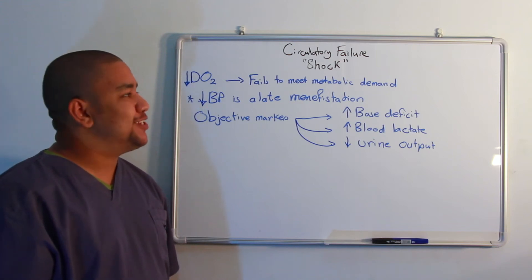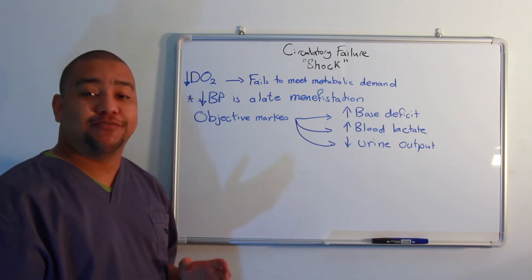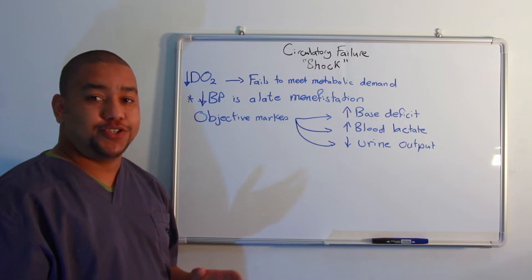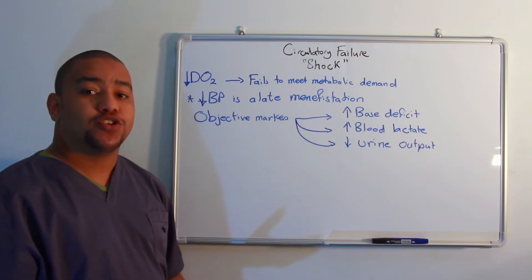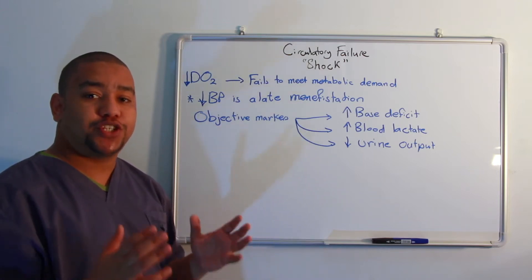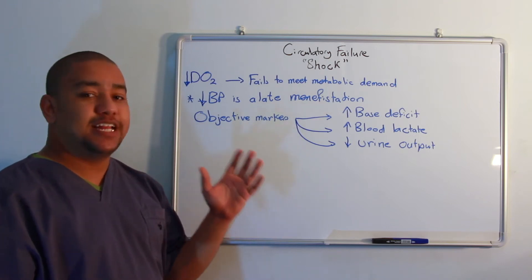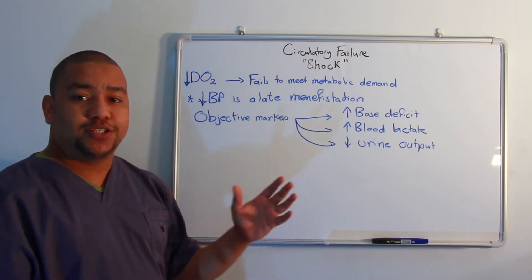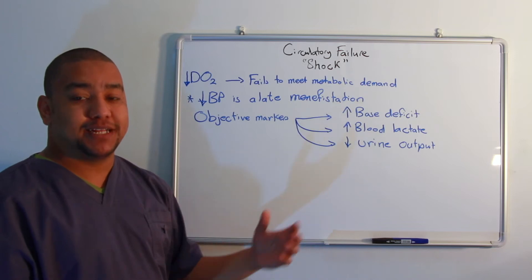Hello, so today we're going to speak about circulatory failure, also known as shock. The defining feature of shock is a decrease in the delivery of oxygen to the tissues and failing to meet the metabolic needs.